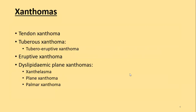Classifying xanthomas, the prominent types are tendinous xanthomas, tuberous xanthomas — among which there is a subtype called tubero-eruptive xanthomas — then eruptive xanthomas, and dyslipidemic plane xanthomas. Among the plane xanthomas there are further three different types: xanthelasma, plane xanthomas of the body, and palmar xanthomas.